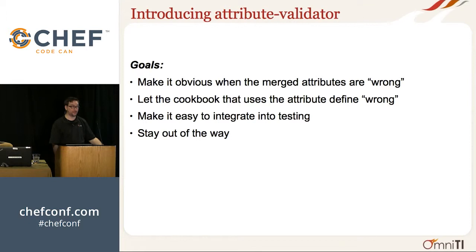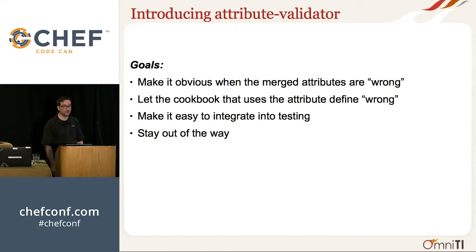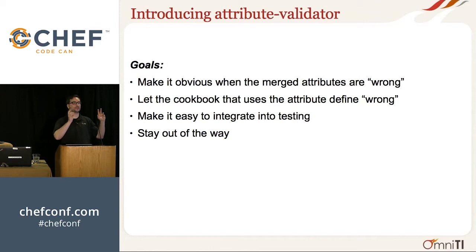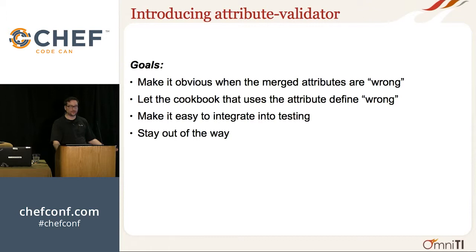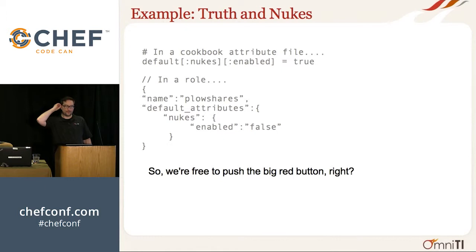Part two of three: validation is sought. Introducing attribute validator. I wanted something that would help me with these problems — discussed at the community summit, it's a little more polished now and has been in production use since then. The goals were to make it obvious when things are wrong, to allow a cookbook to define exactly what 'wrong' means, to make it easy to integrate into testing, and to allow validation to be turned off when needed — because ops engineers need to get their job done sometimes when your little finicky thing is breaking.